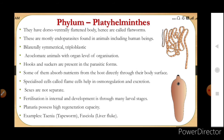Platyhelminthes have bilateral symmetry and are triploblastic — they are the first triploblastic animals in the animal kingdom. They are acoelomate with organ level of organization. Hooks and suckers are present in parasitic forms. Flame cells help in osmoregulation and excretion. Sexes are not separate; fertilization is internal with indirect development through many larval stages. Planaria possesses high regeneration capacity. Examples are Taenia and Fasciola.